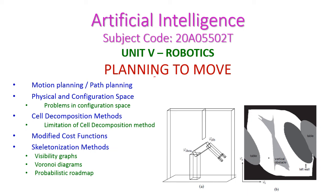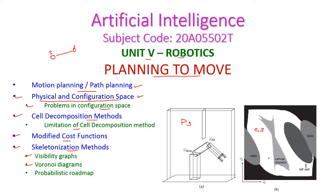In this artificial intelligence class, we will see planning to move from Unit 5 robotics — how a robot will move from source to destination using motion planning or path planning. First, we will see the physical and configuration space of the robot. Then, different methods to find path planning: cell decomposition, skeletonization, visibility graph, Voronoi diagrams, and probabilistic roadmap.